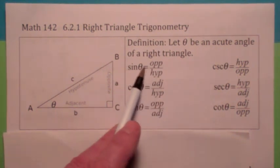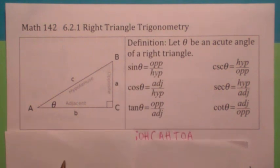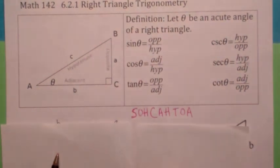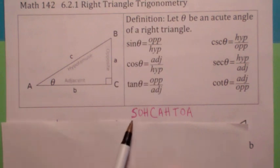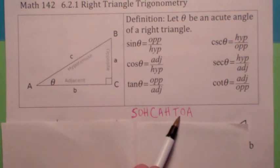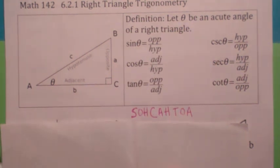These three are the reciprocals of these three. Some people like SOHCAHTOA — I'm not really a big SOHCAHTOA fan, but all that means is sine is opposite over hypotenuse, cosine is adjacent over hypotenuse, and tangent is opposite over adjacent. Another way to learn these is to do lots and lots of homework.